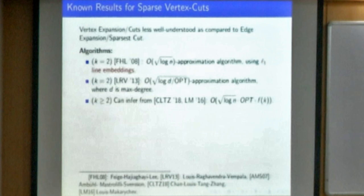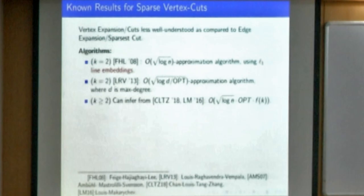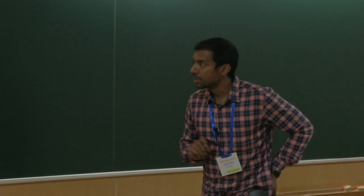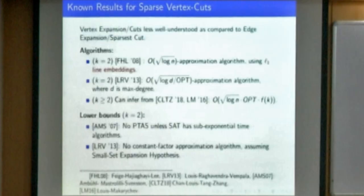Here are some of the worst-case results known for vertex expansion. For k equal to 2, Feige, Hajiaghayi and Lee gave an order square root of log d divided by opt approximation, where d is the maximum degree in the graph — the degree turns up for vertex expansion unlike the edge expansion version. For k greater than 2 there is no explicit published work, but one can infer an approximation guarantee for the k-way expansion objective of order square root log n times f(k) times the optimal, where f(k) is usually a polynomial in k. In terms of lower bounds, no constant factor approximation is expected, and there is no constant factor approximation algorithm assuming the small set expansion hypothesis.